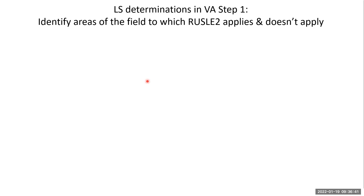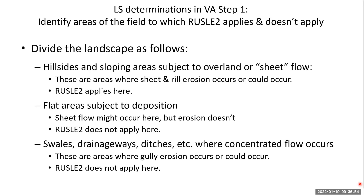Let's walk through the steps in this document. The first thing you do is identify areas of the field to which RUSLE2 applies and doesn't apply. You divide the landscape into three kinds of areas. Hillsides and sloping areas subject to overland or sheet flow are where sheet and rill erosion occurs — RUSLE2 applies here.